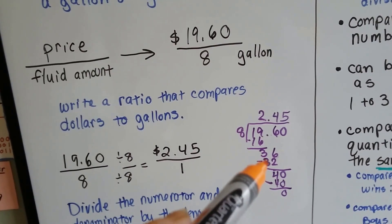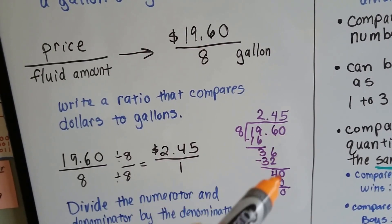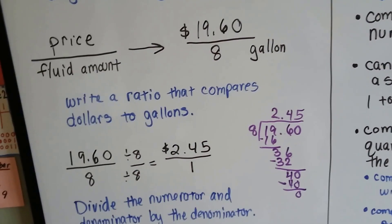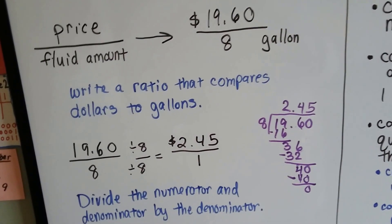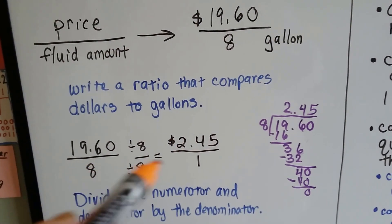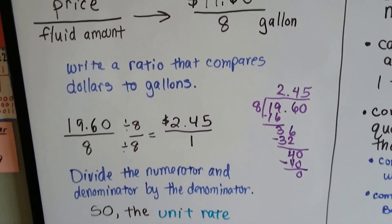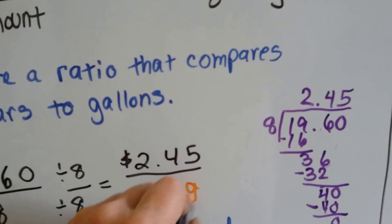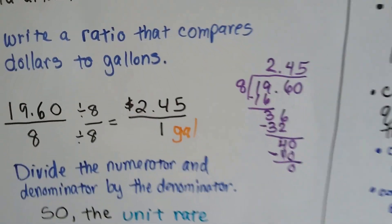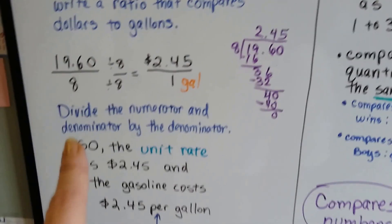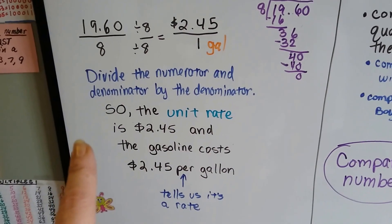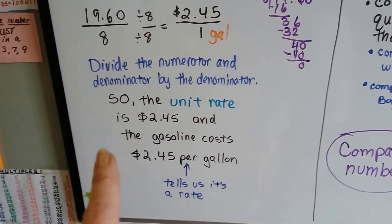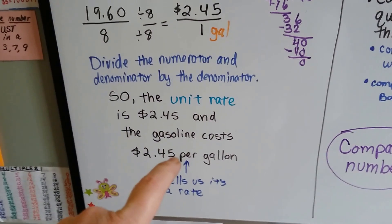8 times 4 is 32. We do our subtraction and get 4. It's the 0's turn to come down. 8 goes into 40 five times — $2.45 for 1 gallon. So this would be for each gallon. You divide the numerator and the denominator by the denominator, so the unit rate is $2.45 per gallon.